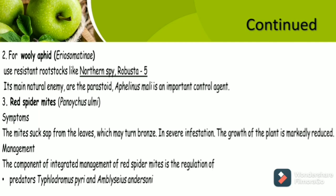The next pest is red spider mites. The causative organism is Panonychus ulmi. Symptoms include mites sucking sap from the trees, which may turn bronze in colour. In severe infestation, the growth of the plant is markedly reduced. Management includes the component of integrated management of red spider mites through regulation of predators, which are Typhlodromus pyri and Amblyseius andersonii.